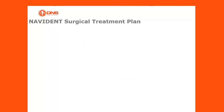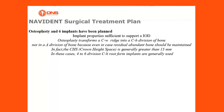The Navident surgical treatment plan included osteoplasty and 6 implants with properties sufficient to support an IOD. Osteoplasty transforms a CW division into a CH division of bone — not an A division of bone — because even in cases of residual abundant bone, sufficient bone should be maintained. In fact, the CHS is generally greater than 15 mm.